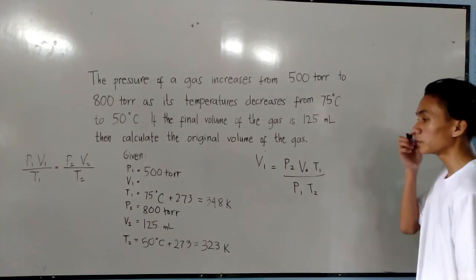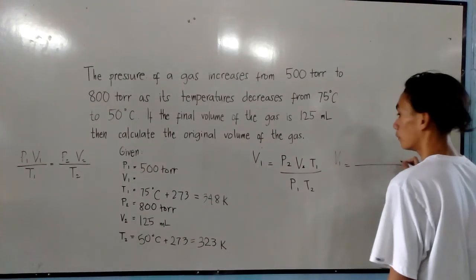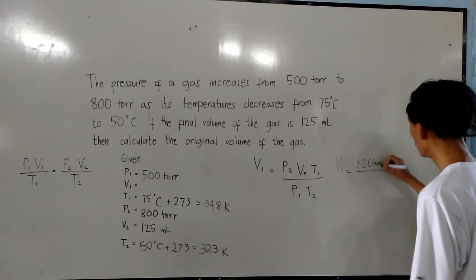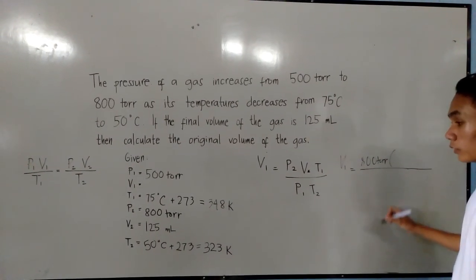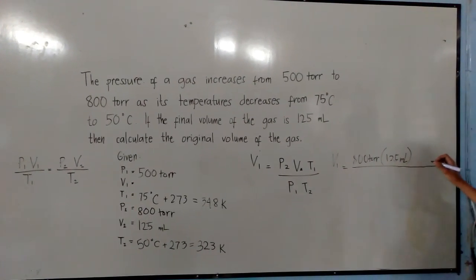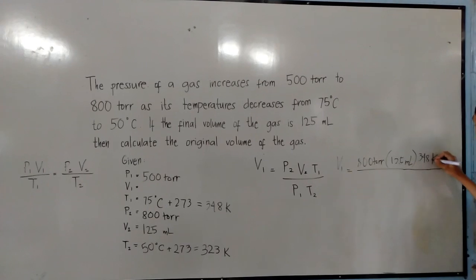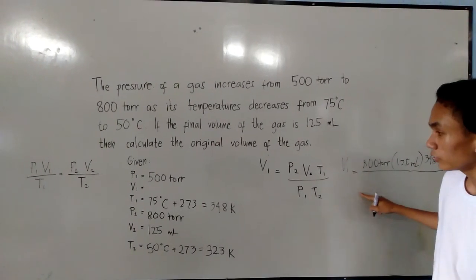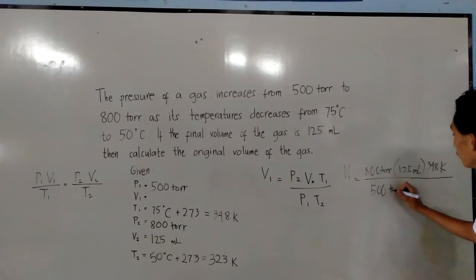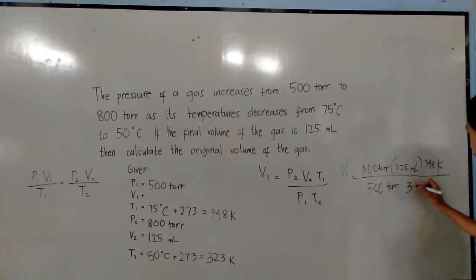The next step is we are going to substitute all the values. The final pressure is 800 torr. The final volume is 125 milliliters and the initial temperature is 348 K. The initial pressure is 500 torr. The final temperature is 323 K.